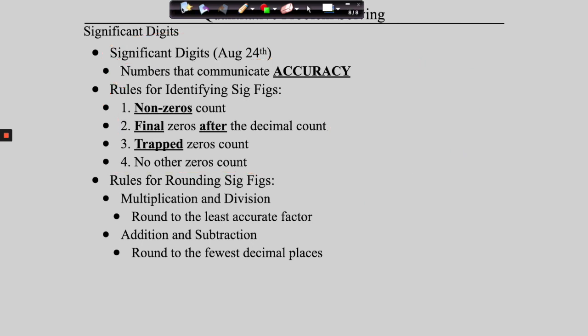Finally, rule number three: trap zeros are significant. If we have the number 1,205, that zero is trapped between the two and the five, and therefore it's significant. We'll be going over this more as we move on. If you have a general sense of this you'll be okay as we move forward. But if in your heart of hearts you know this is completely foreign to you, take a couple minutes and go back to re-watch the screencast from August to refresh your memory.